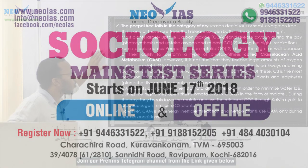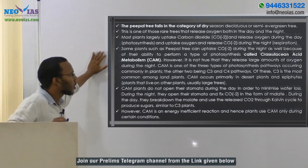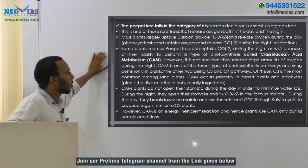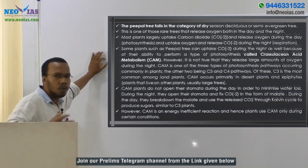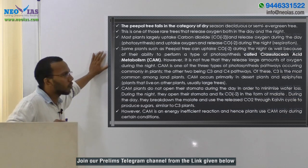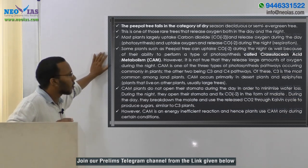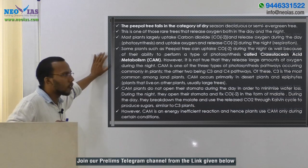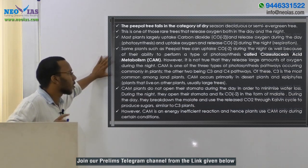However, it is not true that CAM plants release large amounts of oxygen during the night. CAM is one of the three types of photosynthesis pathways occurring in plants — the other two are the C3 and C4 pathways. Out of CAM, C3, and C4, the C3 pathway is the most common among land plants.